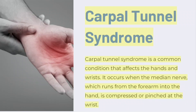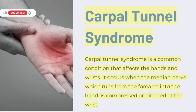Carpal Tunnel Syndrome is a common condition that affects the hands and wrists. It occurs when the median nerve, which runs from the forearm into the hand, is compressed or pinched at the wrist.